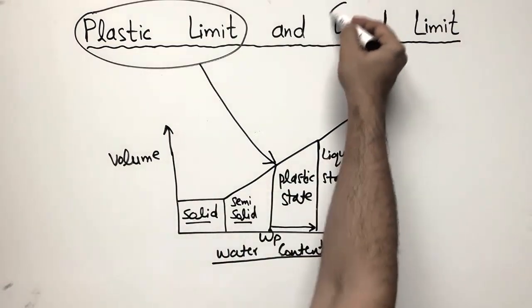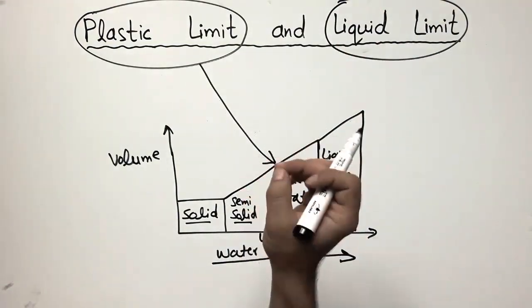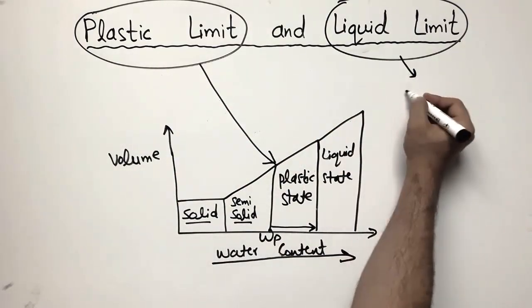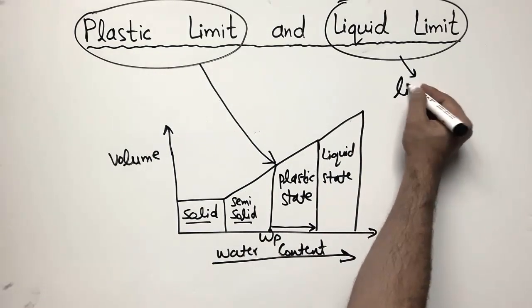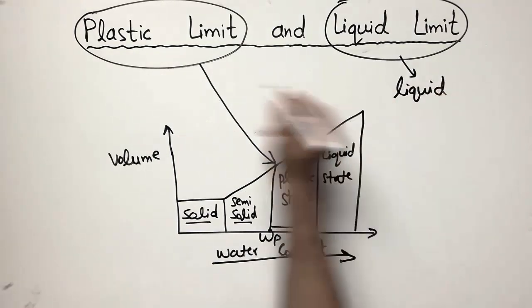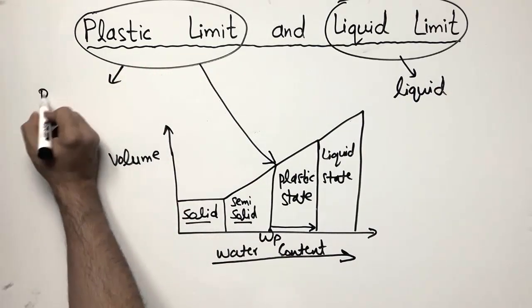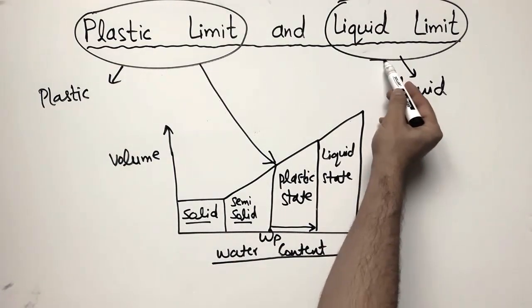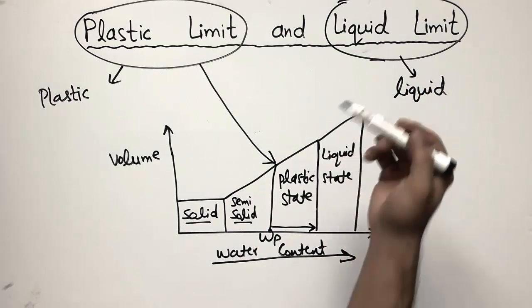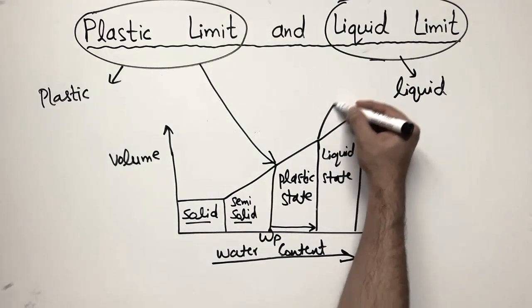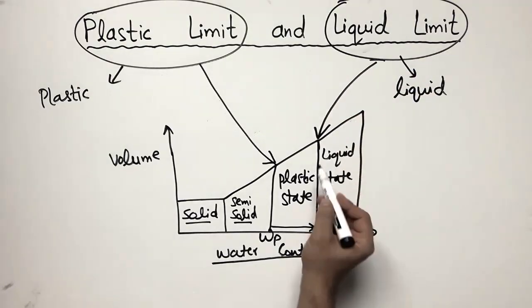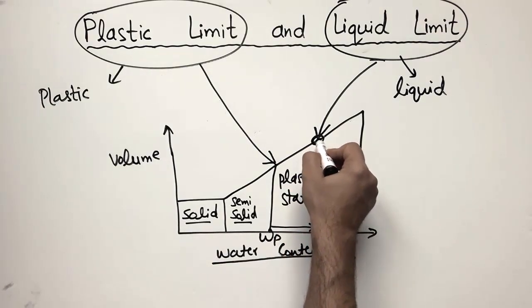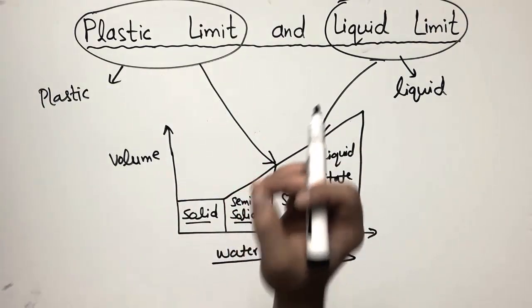Now, what is the liquid limit? The liquid limit is the moisture content at which the soil begins to behave as a liquid. In the plastic stage, your soil behaves as a plastic material. The liquid limit is the moisture content at which the soil begins to behave as a liquid — the ultimate limit of the soil mass. By adding more water from the plastic state, it changes, and at this point, which is the maximum limit, if you add more water, you will get the soil in a liquid state.